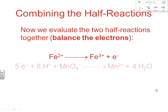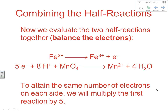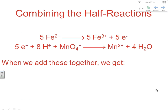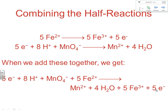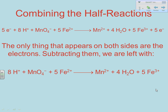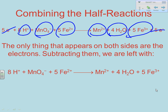Now we have two balanced half-reactions. We need to balance the electron transfer: the iron reaction provides one electron, but the MnO4- reaction needs five. So we multiply the iron half-reaction by five, giving five Fe2+ making five Fe3+ and releasing five electrons. Now the electron transfer is balanced and we can combine the two half-reactions. We add them together — the five electrons on each side cancel. The eight H+ on the left, the MnO4-, and all remaining species are kept. That concludes the notes over this section of the textbook.